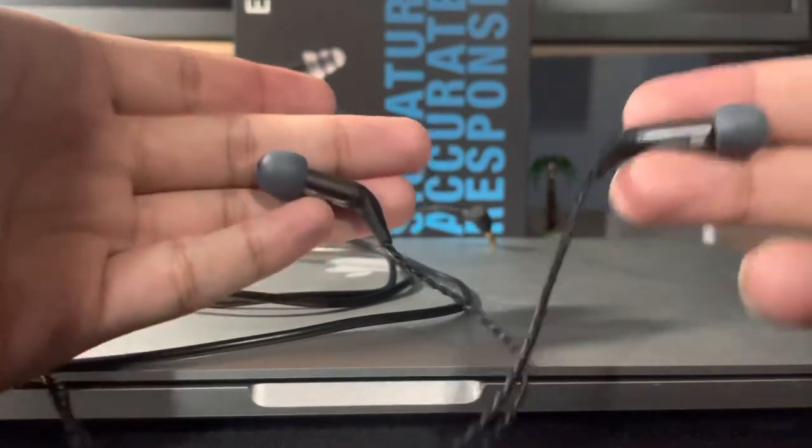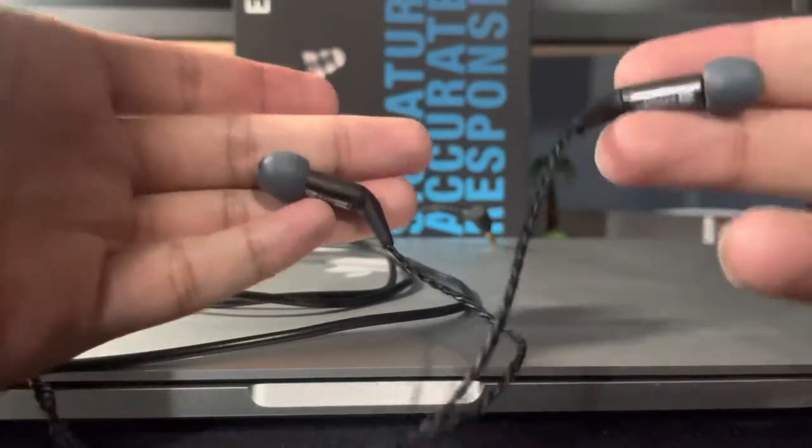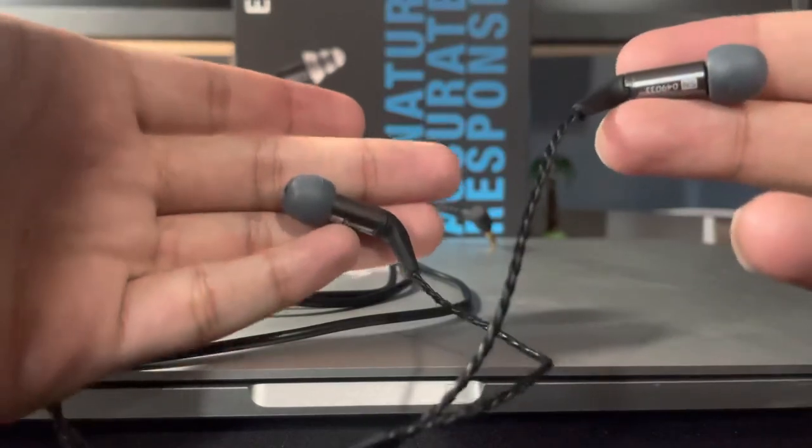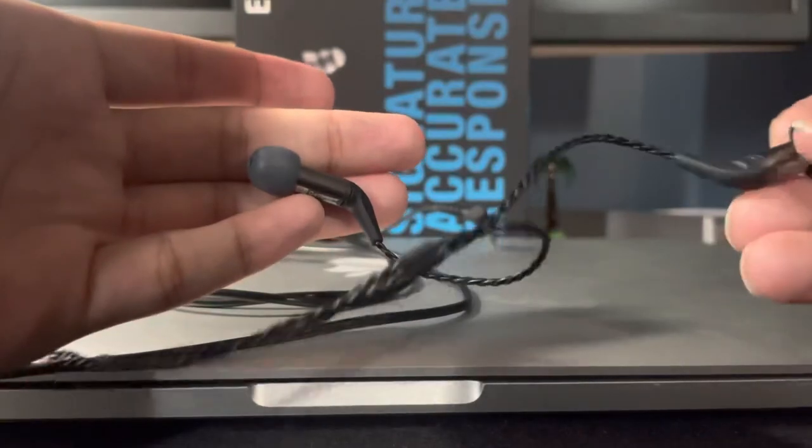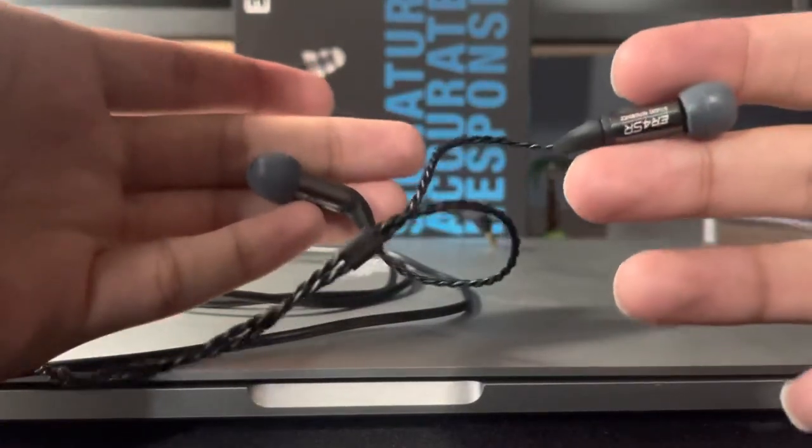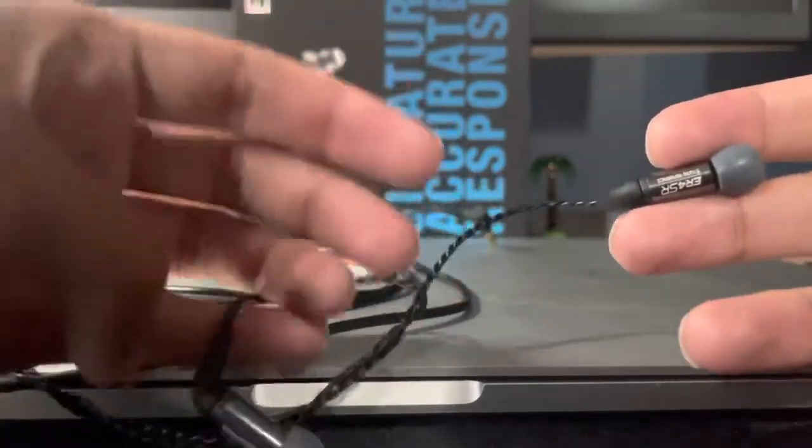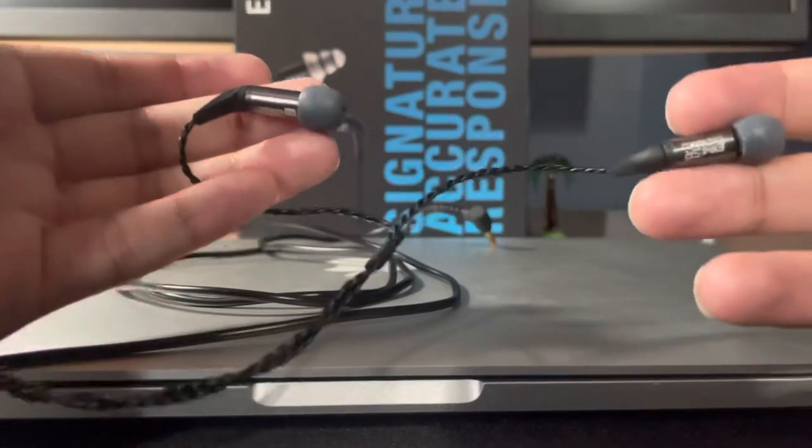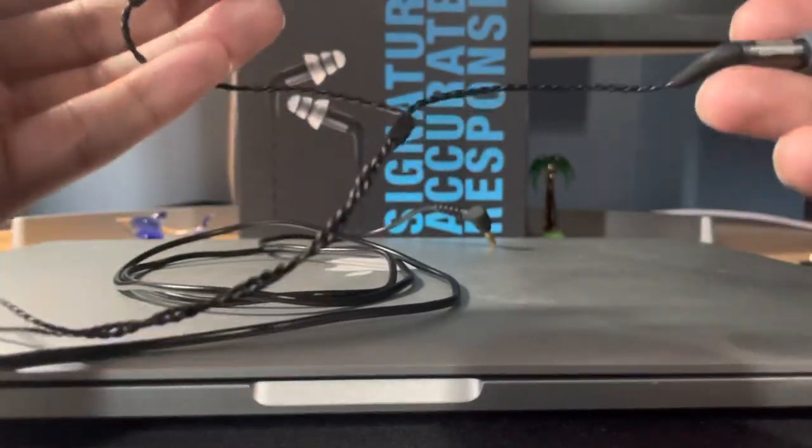Soundstage-wise, I feel like these are pretty neutral. They're not as wide as the Weststone W60s or the Shure SE-846s. But it sounds really coherent because it's one driver. So that's something. They're really small, portable. They block out serious amounts of noise, I would say, up there with the Shure line. Yeah, what am I missing? The build quality is good.